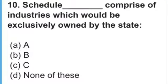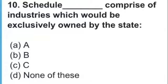Question number 10: Schedule dash comprises of industries which would be exclusively owned by the state. अब देखो ये कुछ चीज़ें हैं जो NCERT में भी properly mentioned नहीं हैं, तो ये extra knowledge है लेकिन important है — अक्सर यह MCQ पूछा जाता है कि जो industries exclusively public sector के under थीं, state के under थीं, वो कौन से schedule में थीं? यह IPR 1956 के features हैं, जिसमें industries को divide किया गया in public, private, and mixed sectors. तो आपको बताना है — Schedule A, Schedule B, Schedule C, या none of these?